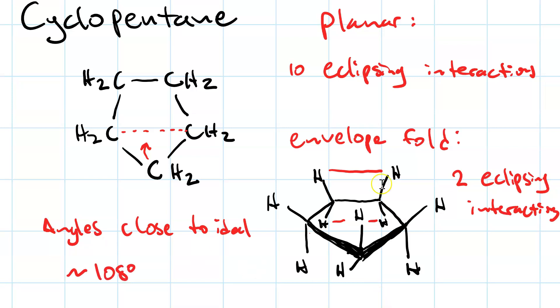Bottom line, having this one corner of cyclopentane folded up like an envelope gives us much less ring strain.